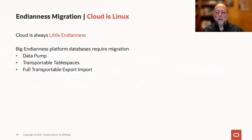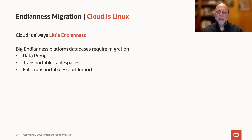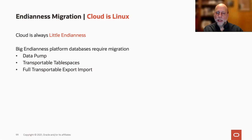The Oracle Cloud is Linux x86-64 — specifically a little Endian Linux platform. That means that if you're migrating from a big Endian platform, your database is going to have to be migrated using a technique that can modify the Endianness of that database. So that means we can't use DataGuard in that case, we can't use just an RMAN backup and restore. We're going to use something like Datapump, transportable tablespaces, or full transportable export import.